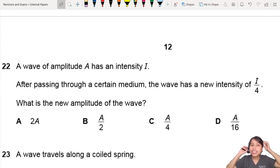This is about wave intensity. A wave of amplitude has intensity I. When you see this, you should already think about the equation: I proportional to A squared.